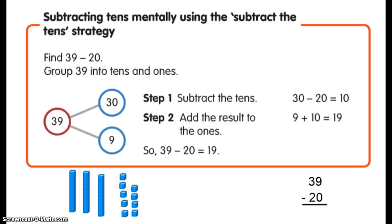Okay, so now let's take a look at the subtraction strategy, subtract the tens, and we're going to use the problem 39 take away 20, or 39 minus 20. Our first step, as always, is going to be to group into tens and ones, so the 39 becomes 30 and 9.